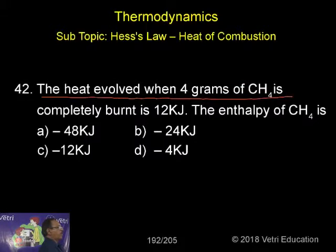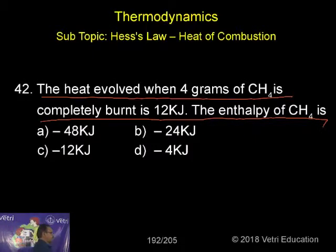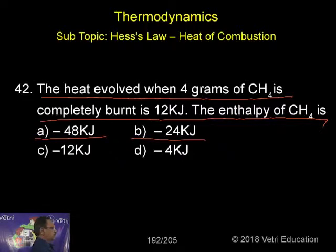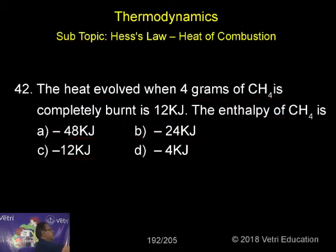The heat given off when 4 grams of methane is completely burnt is 12 kilojoules. The enthalpy of combustion of methane is: A) minus 48 kilojoules, B) minus 24 kilojoules, C) minus 12 kilojoules, D) minus 4 kilojoules. This you have to calculate to find out.